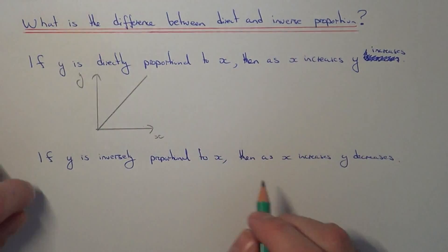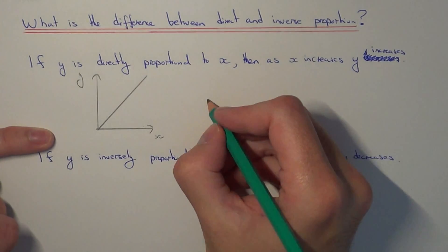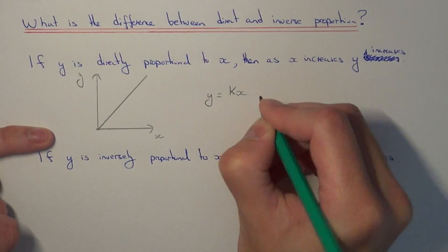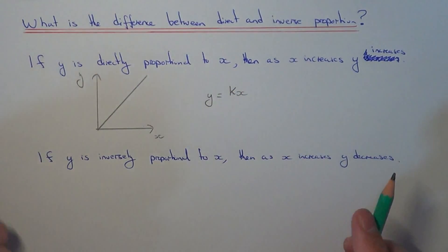And if you were to write down a formula for this type of graph, the formula will take the shape of y equals k times by x, where k is known as the constant of proportionality.